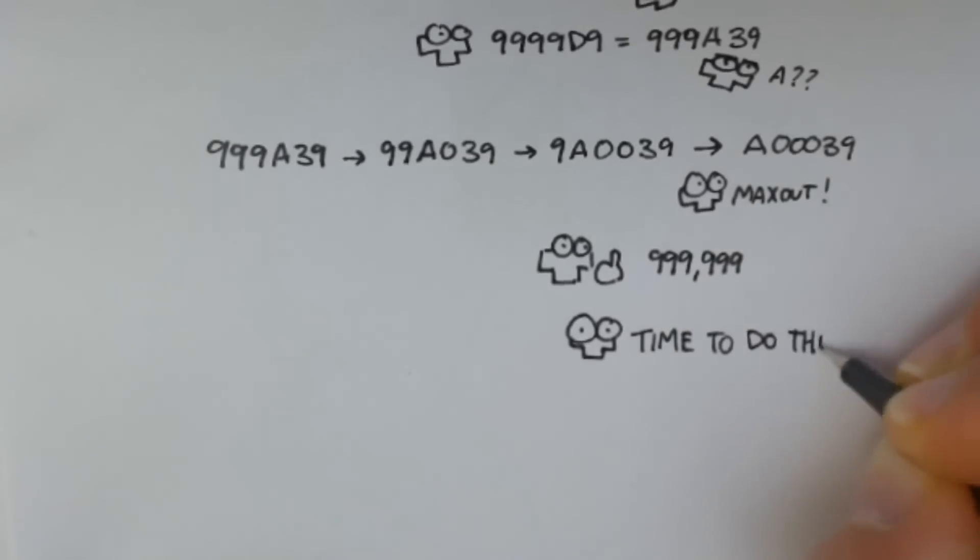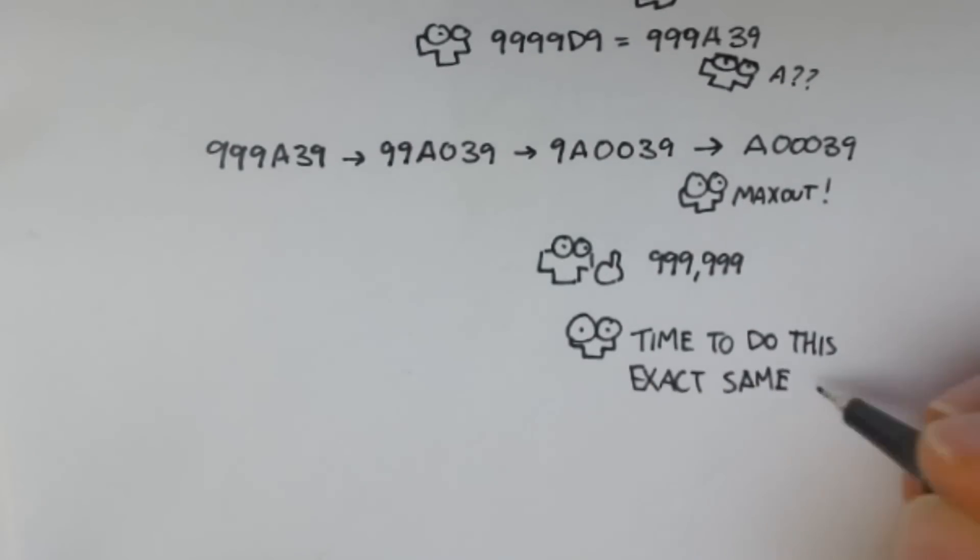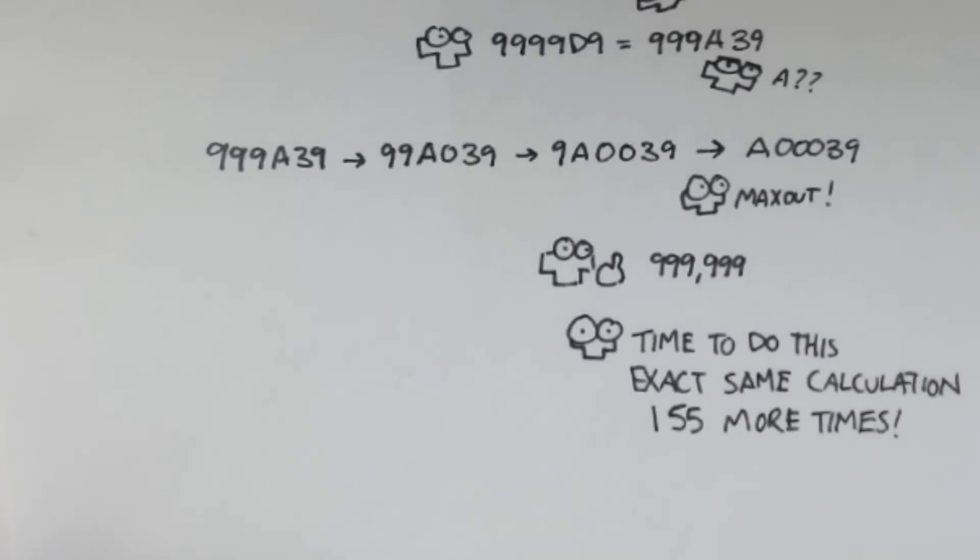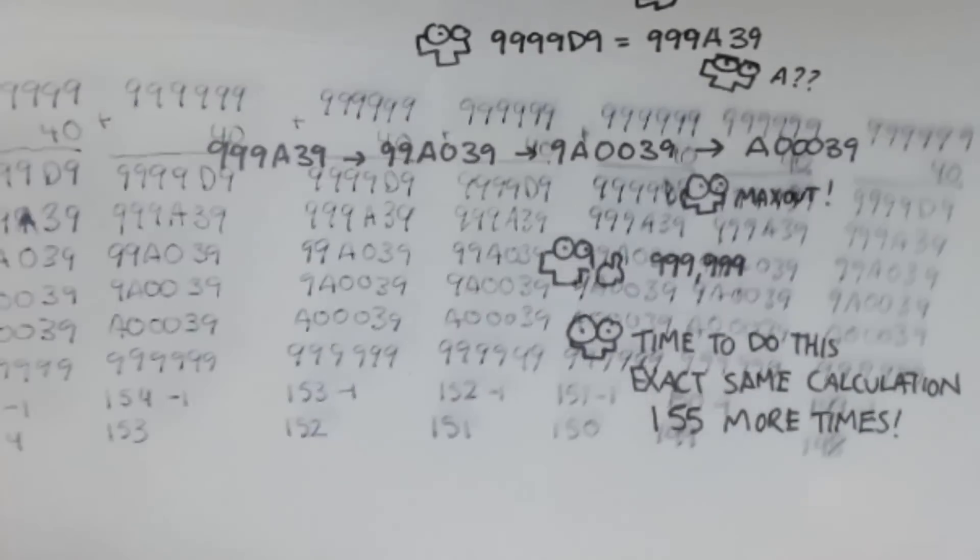Of course, you wouldn't actually know that this math would take so long, we generally assume processors are very fast. But there is a finite amount of time, and that level that I mentioned, 155, is the first point where the game is known to crash.